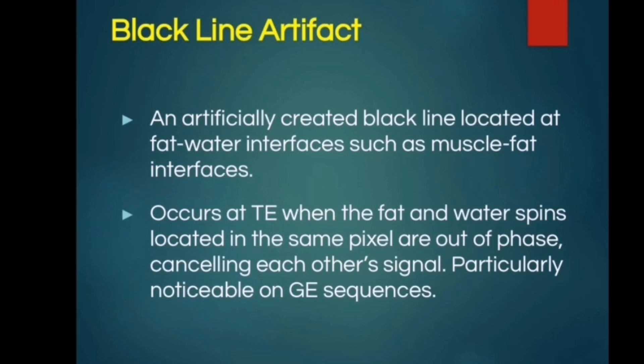A black line artifact is an artificially created black line located at the fat-water interfaces, such as muscle-fat interfaces. It occurs at echo time when fat and water spins located in the same pixel are out of phase, canceling each other's signal. It is particularly noticeable on gradient echo sequences.